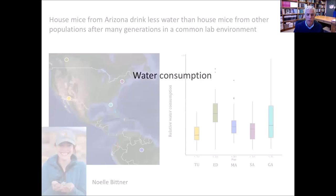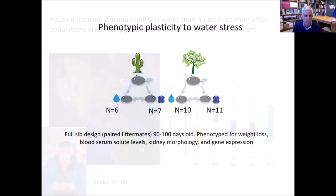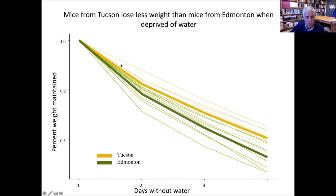The last thing I want to talk about is the phenotype of water consumption. We noticed that mice from Arizona seem to drink much less water than mice from other places, making this a nice model for thinking about the genetics underlying adaptation to arid environments. This work was done by former graduate student Noel Bittner. We used a full sib design collecting phenotypes in two environments — unlimited water and water-restricted. The first thing we see is that mice from Tucson — a very arid environment — lose less weight when water is restricted than mice from a wet environment, suggesting they're adapted to surviving without water.